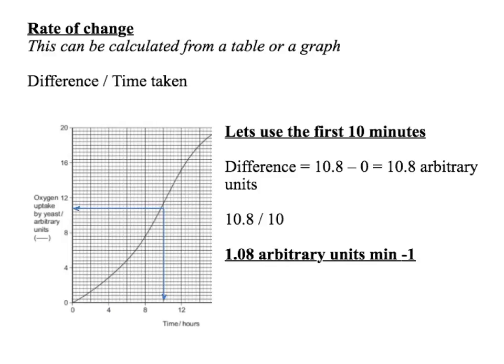Read up from 10 minutes, read across — we've got 10.8. It's gone from 0, so 10.8 minus 0: the difference is 10.8 in arbitrary units. So 10.8 divided by the time taken, which was 10 hours, gives 1.08 arbitrary units per minute.